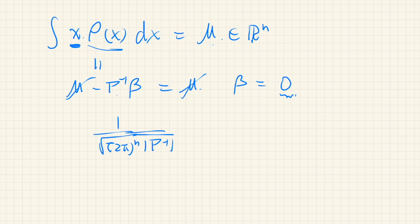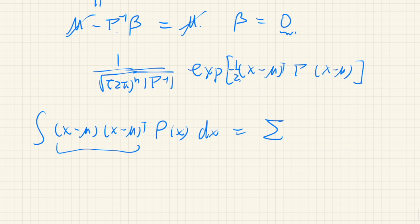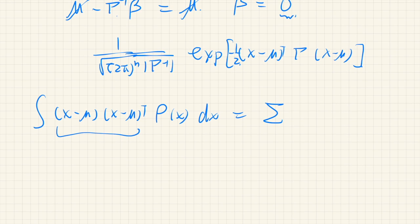So let's write it again: Γ^(-1) determinant, exponential, (x - μ) Γ (x - μ), negative 1 over 2, of course. So if we integrate this to calculate the covariance matrix, we integrate by (x - μ)(x - μ) transpose and ρ, so this is a matrix, dx, that should be the given covariance matrix. But we already know how to integrate this, this is a Gaussian integral.